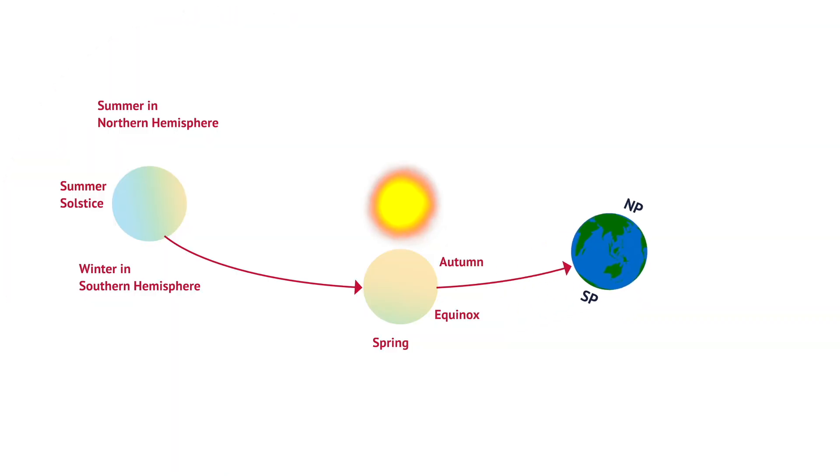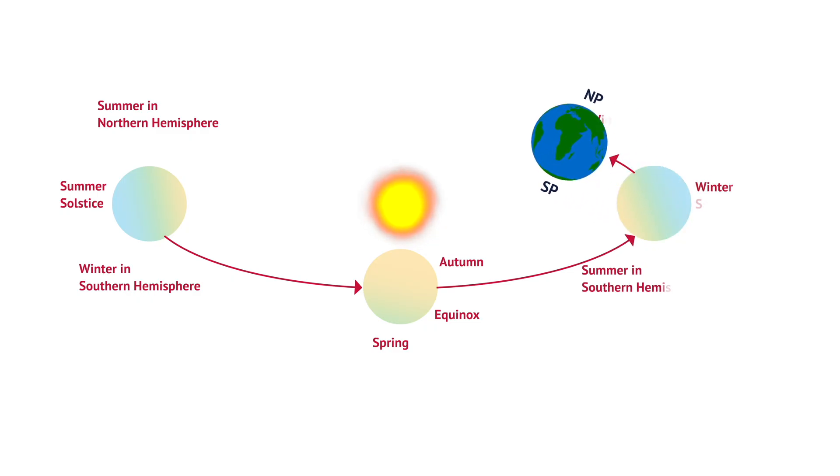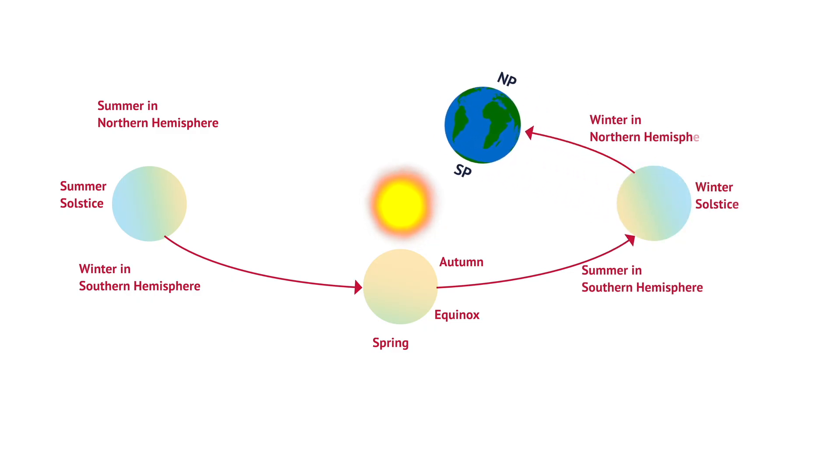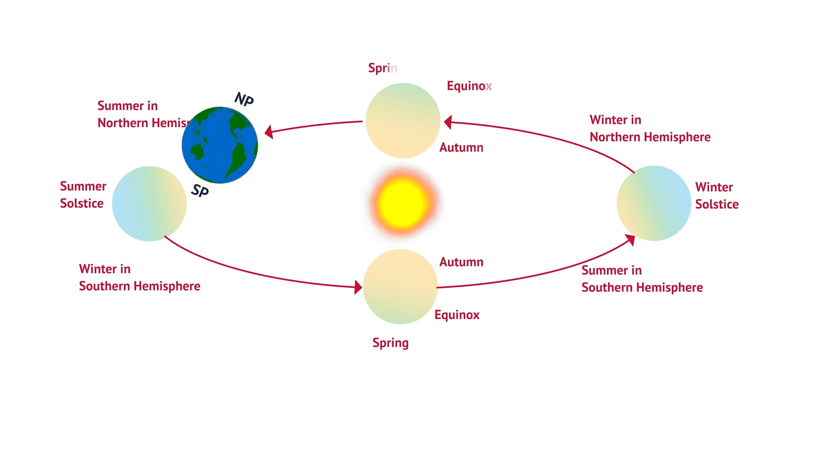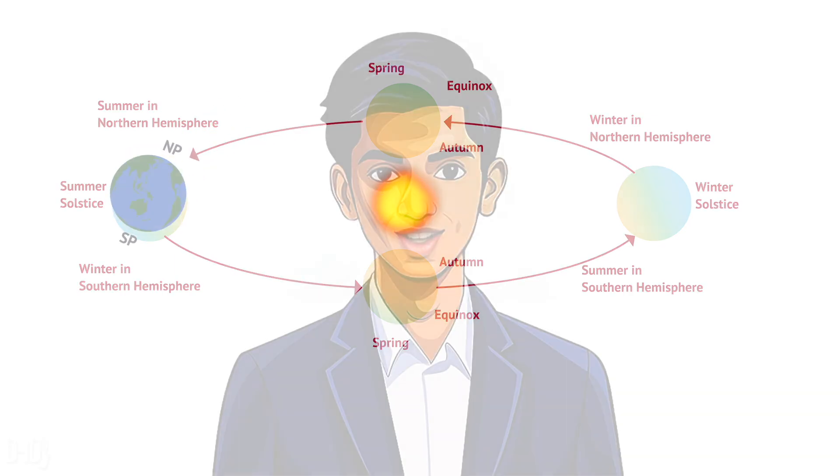Spring and Autumn, called the equinoxes, occur when neither hemisphere is tilted toward or away from the Sun, and day and night are almost equal everywhere. Beyond temperature, the varying amounts of sunlight change how much energy reaches specific regions, causing changes in climate and triggering a cascade of effects on weather patterns and ecosystems.